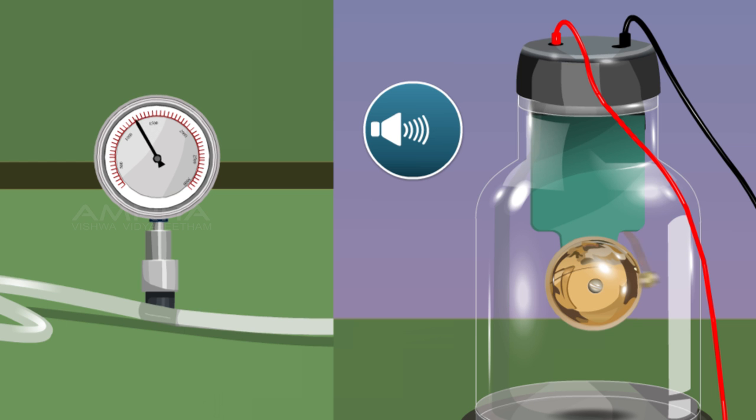Then the intensity of sound from the electric bell gradually decreases and when the vacuum pump completely pumps out the air in the bell jar, you can barely hear any sound. Still, the hammer continues to strike on the gong. Hence it is clear that sound needs a medium to travel.